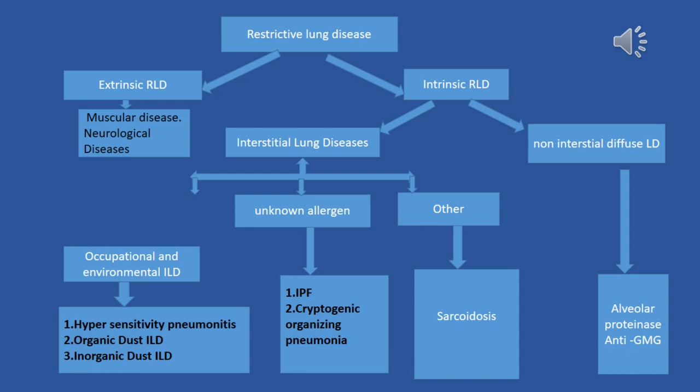There are hundreds of hypersensitivity pneumonitis types named according to the antigen. If you don't know the antigen, we categorize them separately — for example, idiopathic pulmonary fibrosis or cryptogenic organizing pneumonia. Other interstitial lung diseases include sarcoidosis, connective tissue disease, etc.